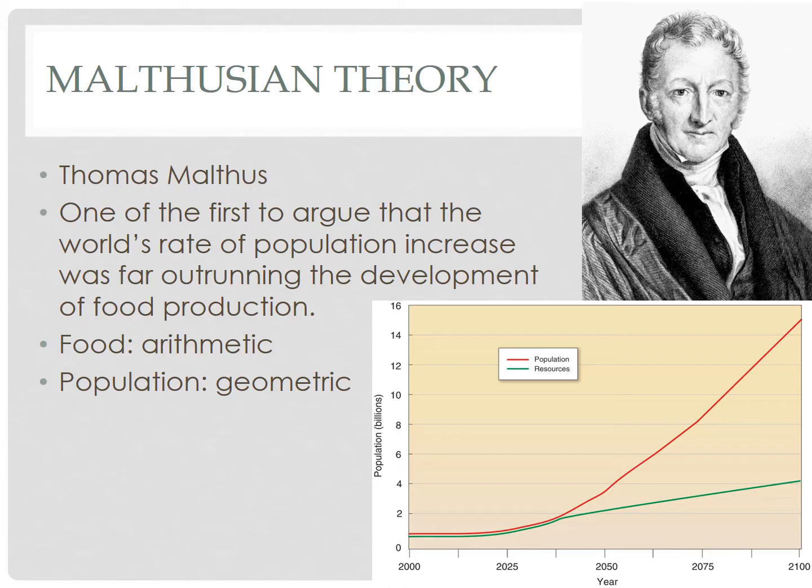So let's begin with: who was Thomas Malthus? He was one of the first to argue that the world's rate of population increase was far outrunning the development of food production. Thomas Malthus was a British economist who was alive during the Industrial Revolution. The Industrial Revolution began in Britain and propelled Britain from Stage 1 into Stage 2 of the demographic transition. When death rates dropped, life expectancies increased, and population growth soared. Malthus noticed this, and in 1798 published a work titled An Essay on the Principle of Population.